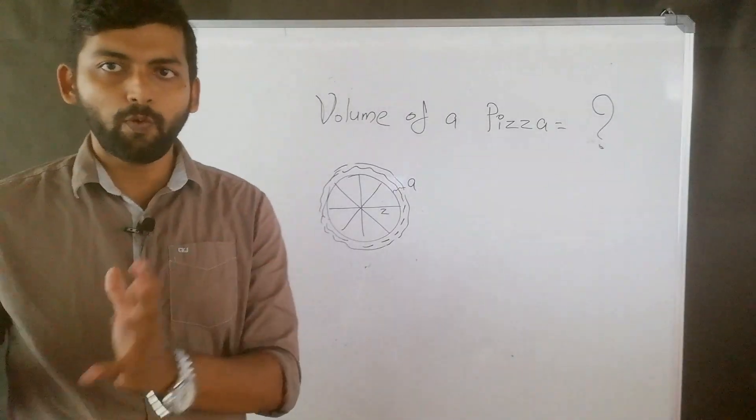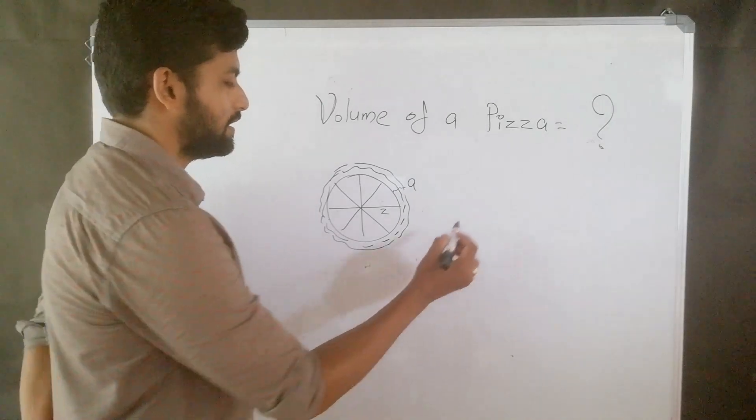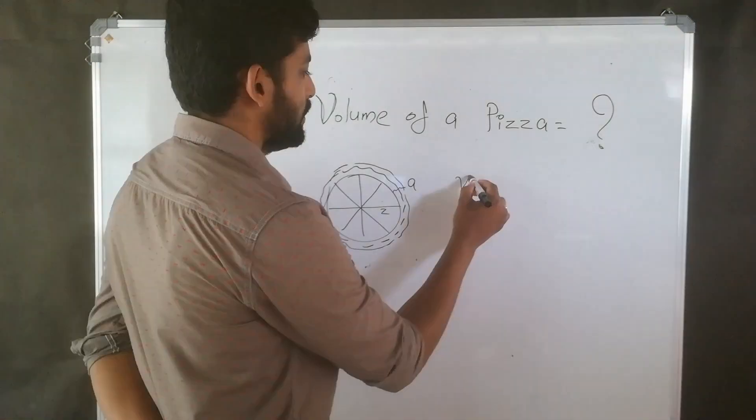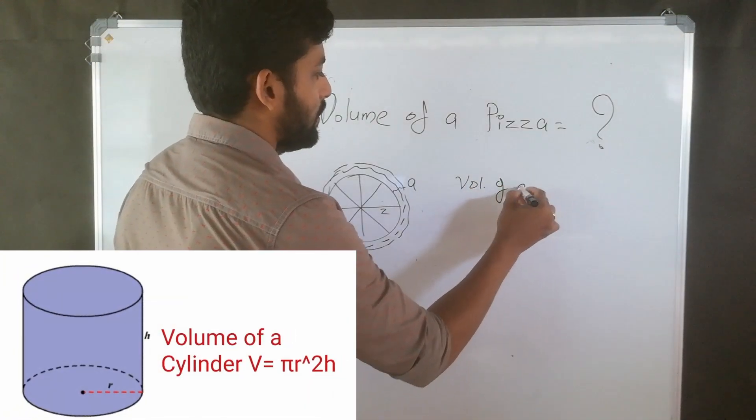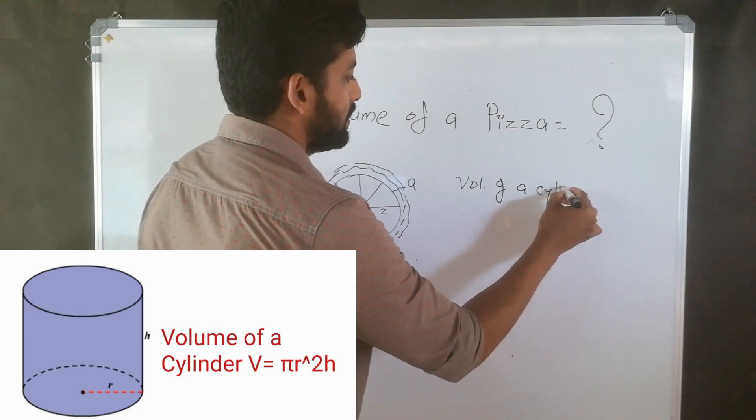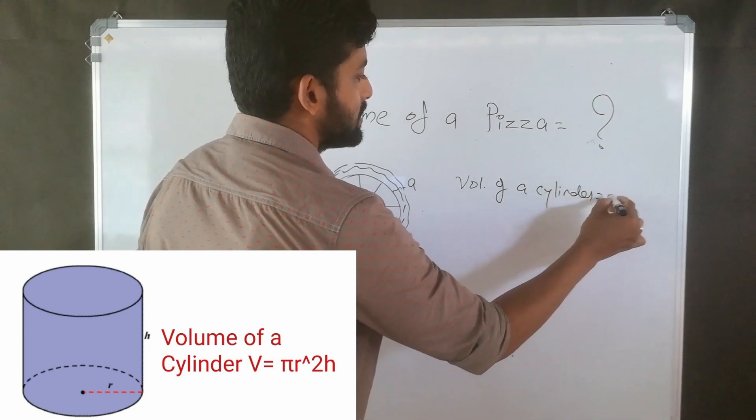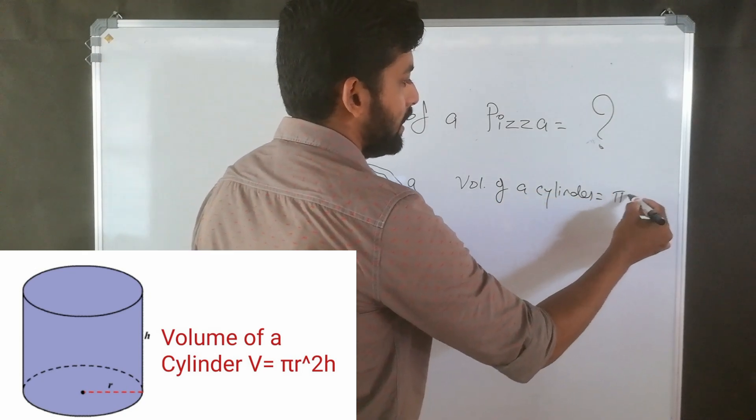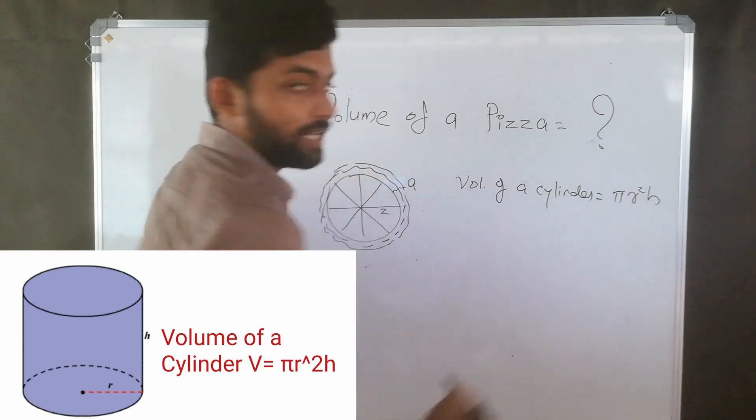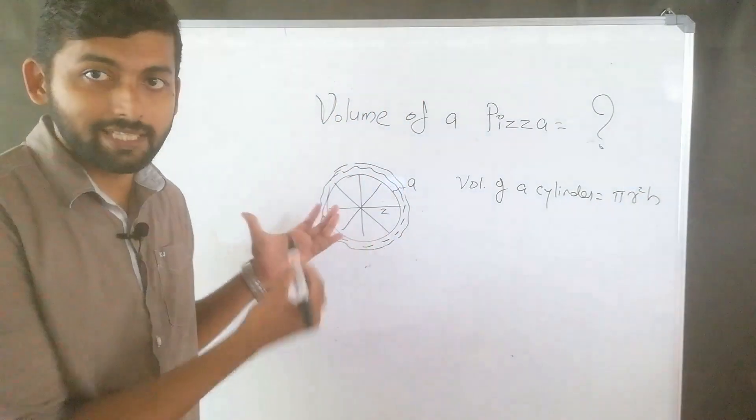But we know what is the volume of a cylinder, that is volume of a cylinder that is equal to pi r square h. So here also we can apply the same formula.